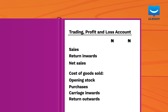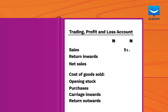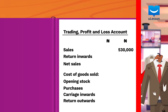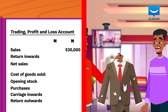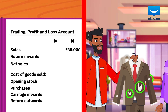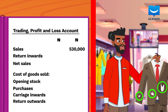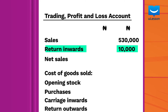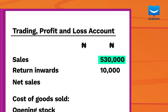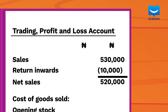Cairo PLC made a total sales of 530,000 Naira, but goods worth 10,000 Naira were returned as a result of damages. These are called return inwards. They will be deducted from the expected sales value to get the net sales. So the net sales, in this case, is 530,000 Naira minus 10,000 Naira, which equals 520,000 Naira.